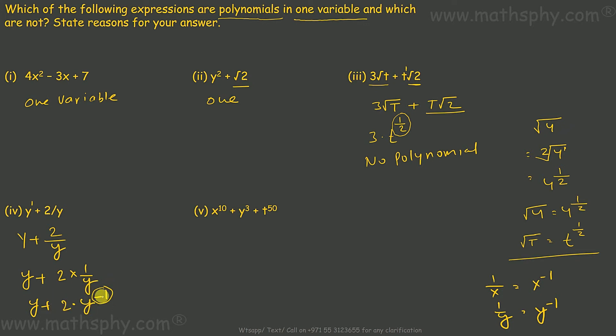This one here: x raised to 10, y raised to 3, and t raised to 50. Powers are all right, all are positive integers. Variables are all right. I can see x, y and t. I can see 3 different variables. So this polynomial has 3 variables. This is a polynomial of 3 variables. This one is one variable, no polynomial, no polynomial, and this is 3 variables.